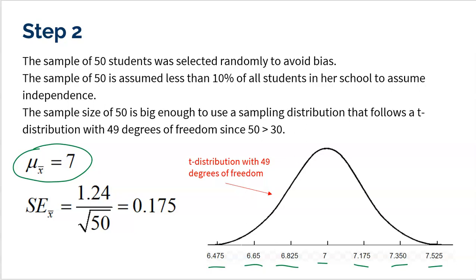Now I have to check conditions. The 50 students were selected randomly to avoid bias. The sample of 50 is assumed to be less than 10% of all students — it said it was a large school, so I'm confident. And the sample of 50 is large enough — greater than 30 — to use a t-distribution with 49 degrees of freedom. I can't use a normal model because I'm using the sample standard deviation instead of sigma, the population standard deviation, which I don't know. T-distributions look a lot like normal but are slightly flatter and more spread out.